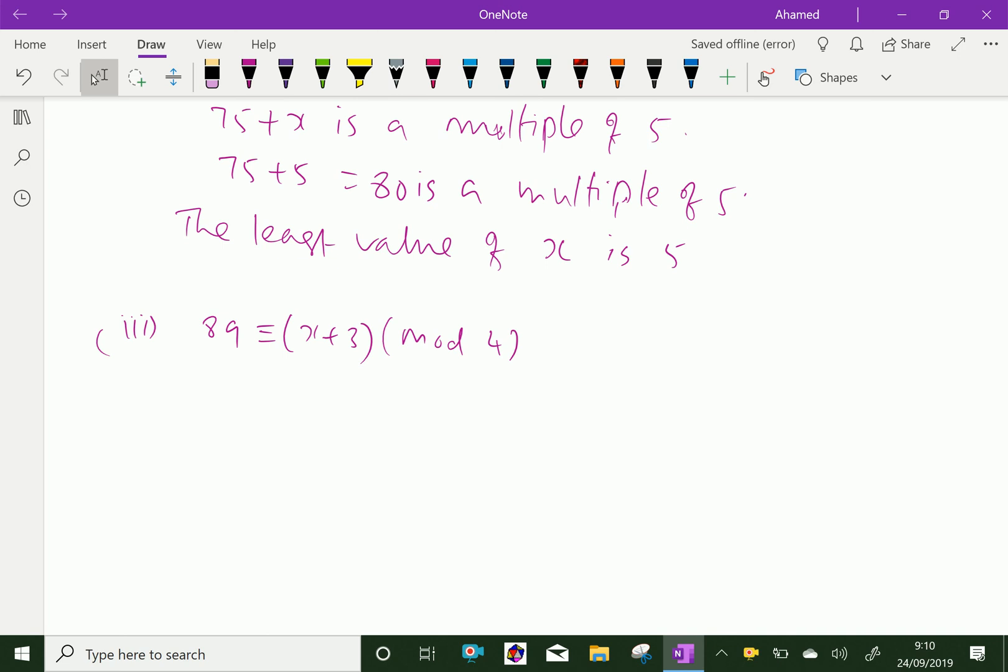Now, we will solve like 89 minus x plus 3 is equal to 4n, where n is an integer.